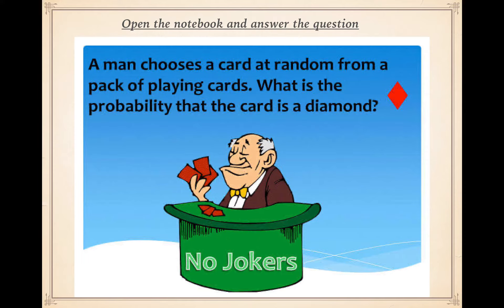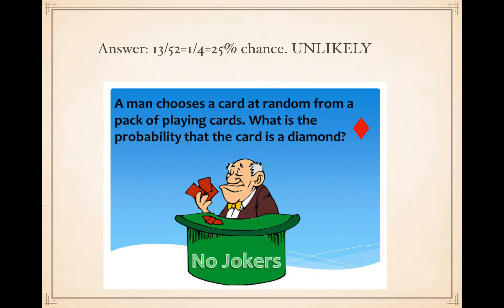Open your notebook and answer: a man chooses a card at random from a pack of playing cards — what is the probability that the card is a diamond? Think about how many diamond cards are in the deck. If you have a deck of cards, that would be helpful. The answer is 13 over 52, or one in four — a 25 percent chance of getting a diamond card, which is quite unlikely.